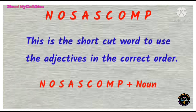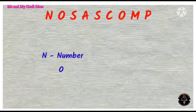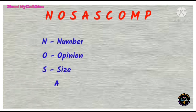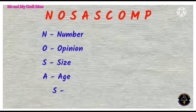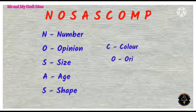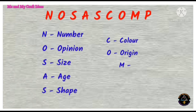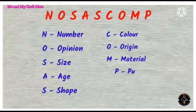N-O-S-A-S-C-O-M-P — NOSAS COMP. This is the shortcut word to use the adjectives in the correct order. N for number, O for opinion, S for size, A for age, another S for shape, C for color, O for origin, M for material, and P for purpose.